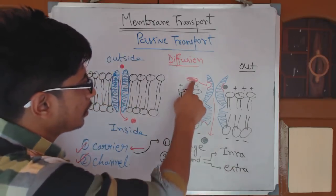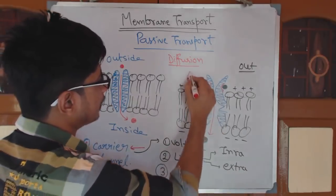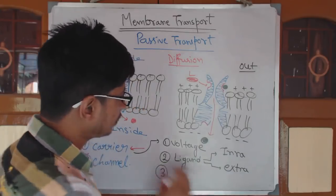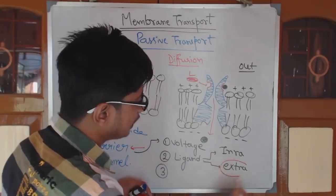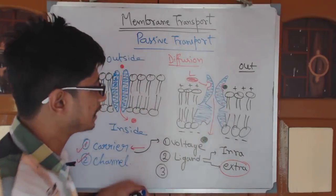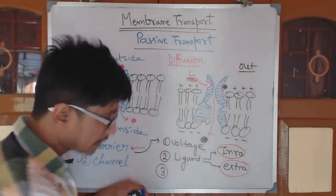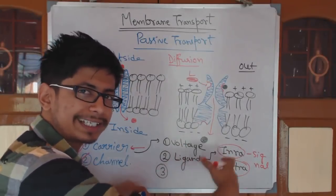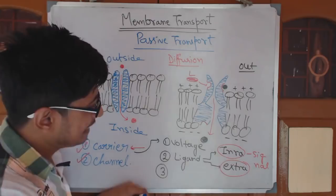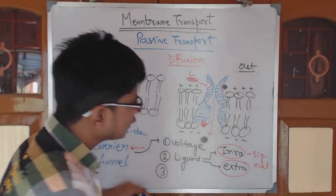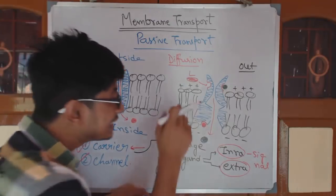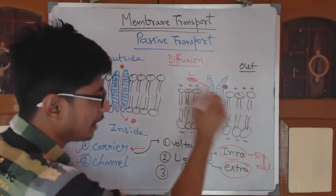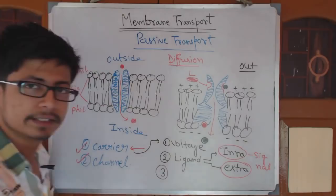Ligand-gated means a specific ligand will come and bind. Upon the binding of the ligand only, the channel will open; otherwise it will not open. For the extracellular ligand example I already showed you. In the intracellular case, it is also known as signal-gated. Chemical signaling or cell signaling going on inside the cell — a molecule from the intracellular space can go and bind to the intracellular binding site of that protein and trigger it to open. That is the example of a signal-gated ion channel.